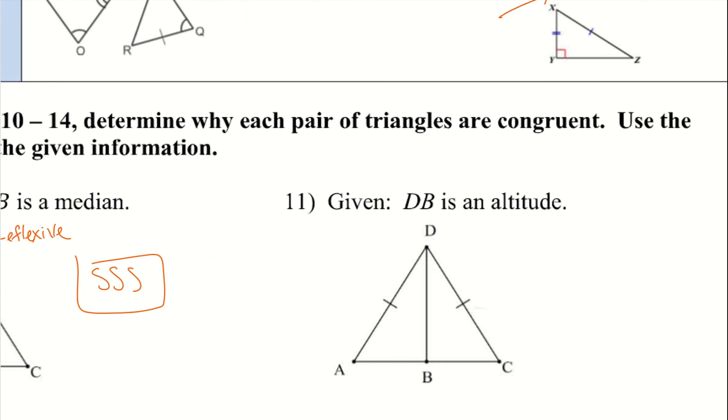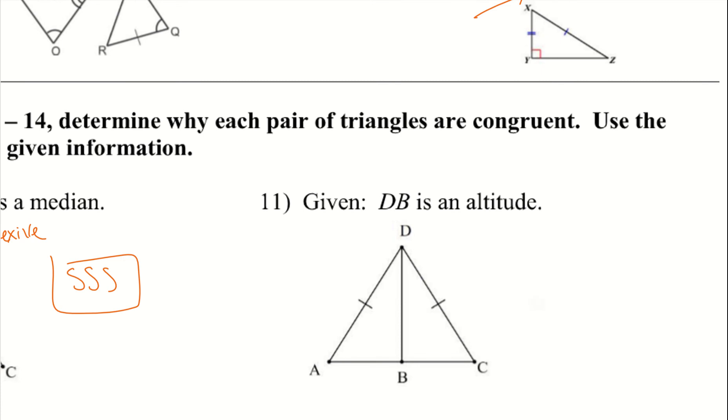Let's take a look at 11 where DB is an altitude. Altitudes create those 90 degree angles, and then once again we'll use the reflexive property. We have a side here, a side here, and then we have a 90 degree angle. Remember whenever we have that 90 degree angle, we want to look for if we have hypotenuse leg. And I do in fact have a hypotenuse and a leg. I have a hypotenuse here and then I have one of the legs of my triangle over here. It doesn't matter which leg, it just has to be one of the legs. Therefore we can prove these two triangles are congruent by hypotenuse leg.